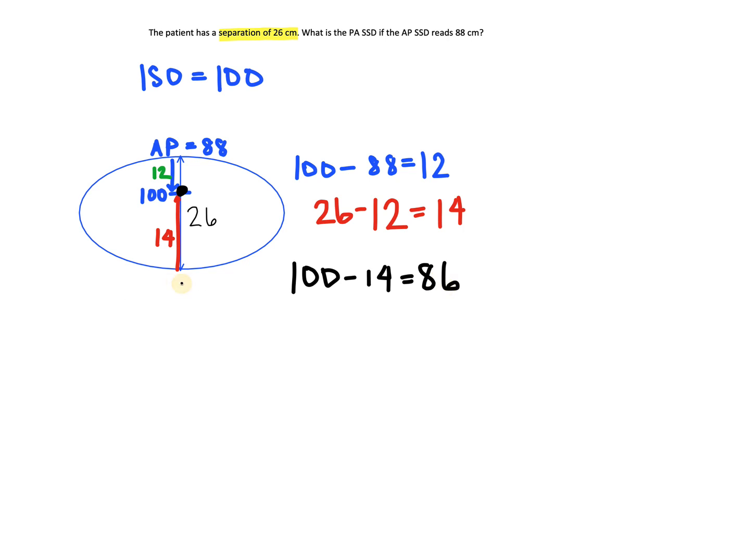So this will be the PA SSD. This is an SAD treatment because the isocenter is within the patient. However, we can use SSDs as ways to set up the patient. So we will triangulate and then set our SSD, and that will help us get into treatment position.